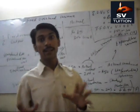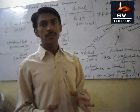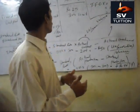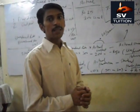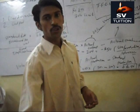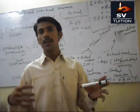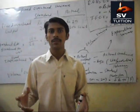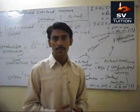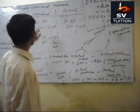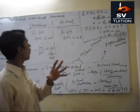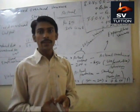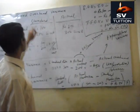Fixed overhead is that indirect expense which will not change by changing in production. For example, salesman salary — for producing and selling one pen, we can appoint a salesman on a daily, hourly, or monthly basis. So the salary of the salesman will be a fixed overhead, and if we want to know whether we have paid less or more salary to him, then we have to create a fixed overhead variance.